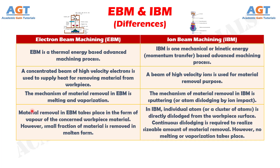Number 4. Material removal in Electron Beam Machining takes place in the form of vapor of the workpiece material; however, a small fraction of material is removed in molten form. In Iron Beam Machining, individual atoms or a cluster of atoms is directly dislodged from the workpiece surface. Continuous dislodging is required to realize a sizable amount of material removal; however, no melting or vaporization takes place.